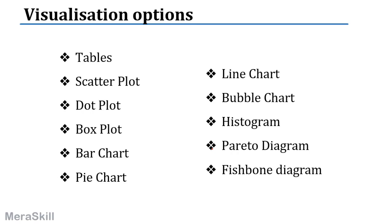Visualization tools include: tables, scatterplot, dot plot, box plot, bar chart, pie chart, line chart, histogram, Pareto diagram, and fishbone diagram. The fishbone diagram is used mainly for quality culture and process improvement.